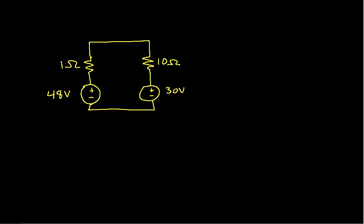As you can see, this circuit has a single loop. Another way of talking about this is to say that all of the circuit elements are in series with each other. A series connection means that all of the current that flows through one element must flow through the next element. For example, all of the current that flows through this 1 ohm resistor must flow through the 10 ohm resistor because they're connected and there's no other place that the current can go. Similarly, all of the current that flows through the 10 ohm resistor flows through the 30 volt source and through the 48 volt source.